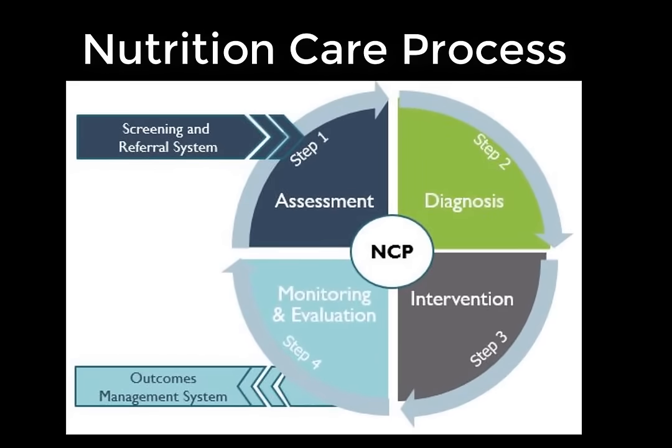The Academy of Nutrition and Dietetics has developed a system called the Nutrition Care Process. It was developed as a framework for improving the consistency and quality of nutrition care and the predictability of nutrition care outcomes. It is not intended to be standardized nutrition care using what is sometimes called cookbook medicine, where everybody gets the exact same plan following a set recipe.